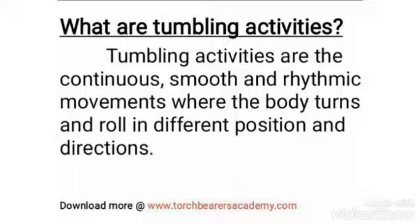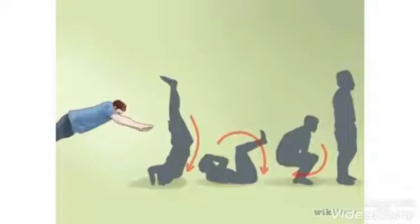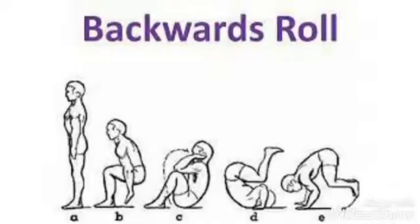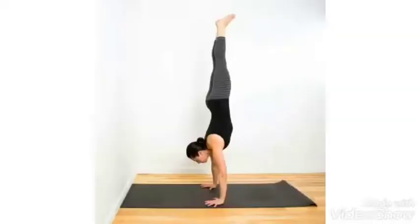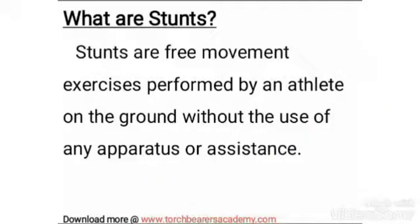Moving on to tumbling activities — tumbling activities are the continuous, smooth, and rhythmic movements where the body turns and rolls in different positions and directions. Some examples of tumbling activities are: forward roll, backward roll, cartwheel, headstand, and handstand.